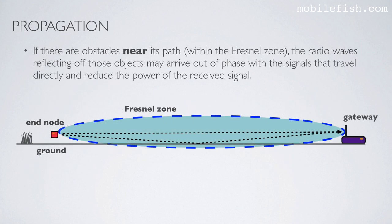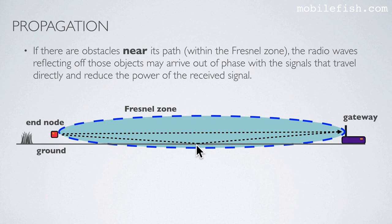But even if there is a direct line of sight, you must always consider the Fresnel zone. I will explain the Fresnel zone in detail in the next video, but for now this is the Fresnel zone, and this is the ground. In this particular example, the ground is an obstacle within the Fresnel zone. If this is the case, the radio waves reflecting off those objects — in this case the ground — may arrive out of phase with the signals that travel directly and reduce the power of the received signal. So this is the direct signal, this is the reflected signal, and these two signals are out of phase, causing the signal strength to be reduced.